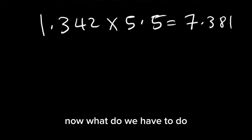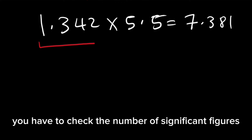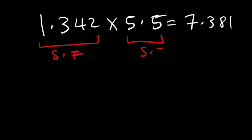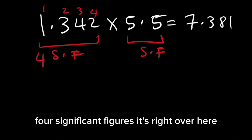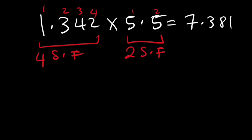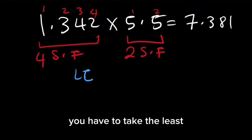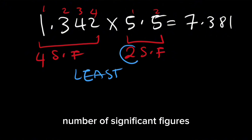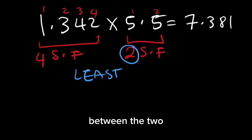Now what do you have to do? In multiplication and division, you have to check the number of significant figures. Right over here we have 1, 2, 3, 4 significant figures. Right over here in this number we have 1, 2 significant figures. You have to take the least number of significant figures, and your answer should be in the least number of significant figures between the two.